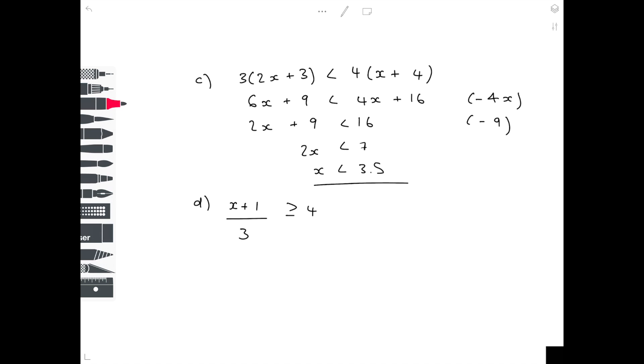Our last example is x plus 1 over 3 is greater or equal to 4. So we need to get rid of this 3 first of all. How do we stop something being divided by 3? Well we multiply by 3. We do that to both sides to get x plus 1 is greater or equal to 12. Take away 1 from both sides to get x is greater or equal to 11.